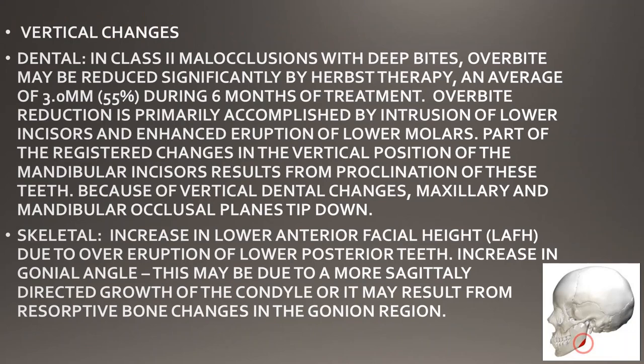Now, what are the vertical changes? In Class 2 malocclusion with deep bites, the overbite may be reduced. In cases with deep bites or overbite, these are reduced significantly by Herbst therapy — an average of 3 mm (55%) during six months of treatment. Since the Herbst appliance is used for six to eight months, almost 55% of the overbite reduction occurs within the first six months.